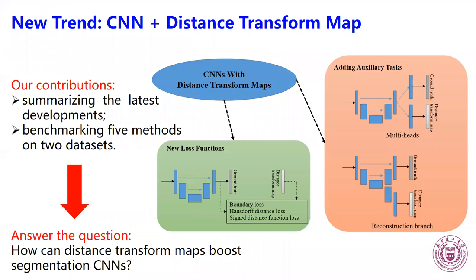Recently, incorporating digital transform maps into segmentation convolutional neural networks has been an interesting new trend. This work has two main contributions. First, we summarize the latest developments of the combination between CNN and digital transform maps and classify them into two categories. Second, we benchmark five typical digital transform-related measures on two datasets.